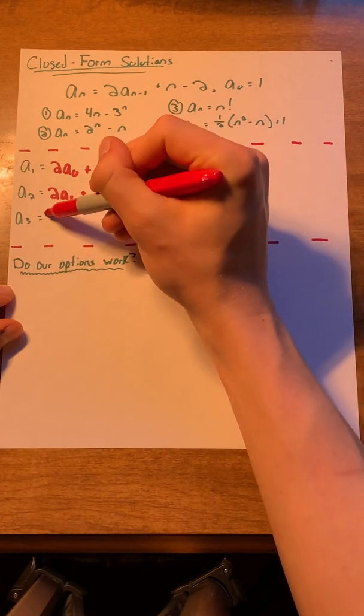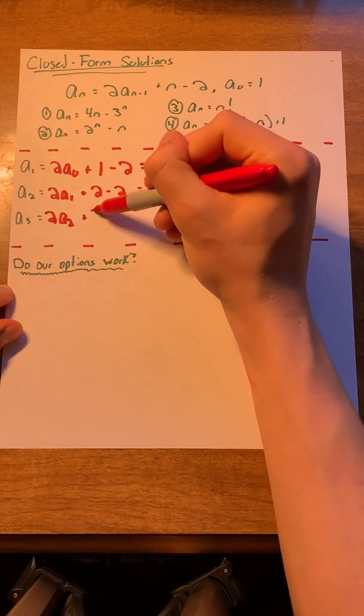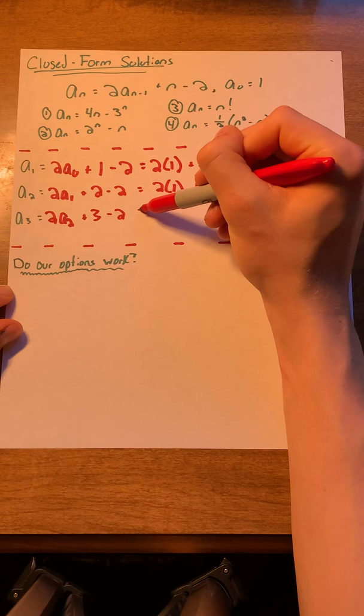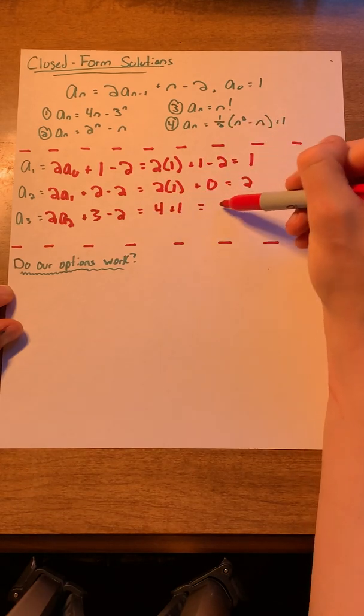And finally, let's solve for a of 3. a of 3 equals 2 a of 2 plus 3 minus 2. This equals 4 plus 1, which equals 5.